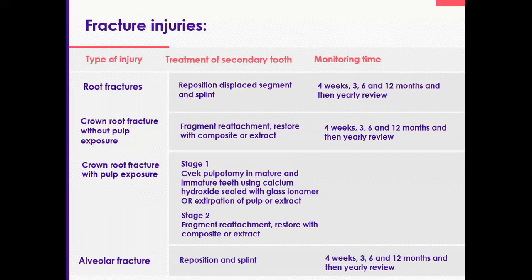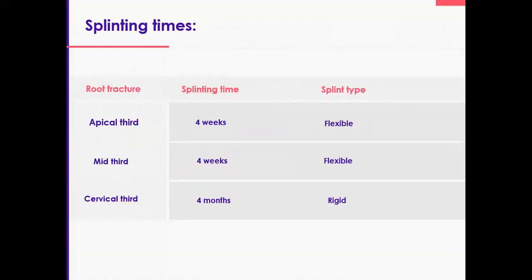Finally, alveolar fractures: reposition, splint, and review. To recap on splinting durations: four weeks flexible for alveolar fractures and apical and mid-third root fractures, and four months rigid for cervical third root fractures.